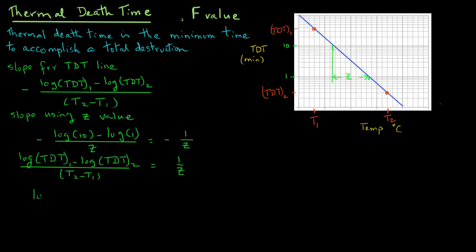Note that we have cancelled out the negative signs. The left hand side numerator we can rewrite as log(TDT1 over TDT2). And the TDT1 that was in the denominator we can move it to the right hand side, so we have TDT1 divided by Z.